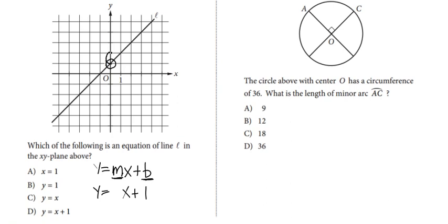As we can see it goes up one and then to the right one, so the slope m is going to be one over one or one. So this is going to be our answer y = x + 1 which is answer choice D.